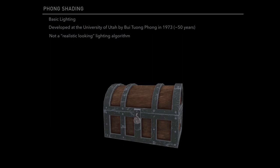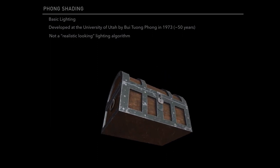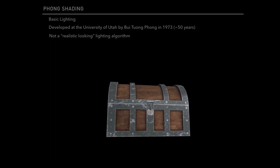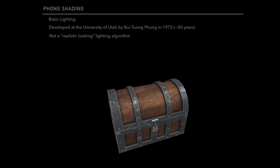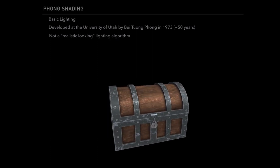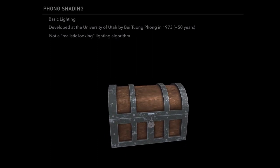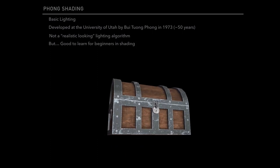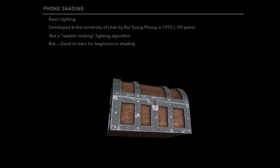The problem with Phong shading is that it's not a realistic-looking algorithm — as you can see it's somewhat cartoonish. It gives you the sense of light, but it's super smooth. In real life, objects have light rays bouncing off of them in all directions; this one is very consistent and smooth, so it looks pretty fake. It's not a common algorithm used today, but it is a really good beginner shading algorithm to get familiarized with lighting.